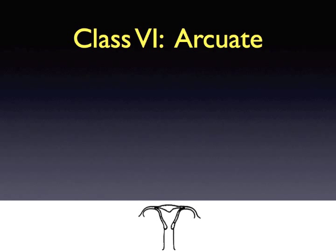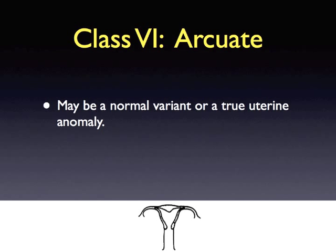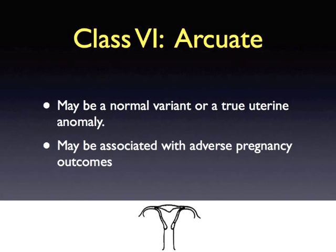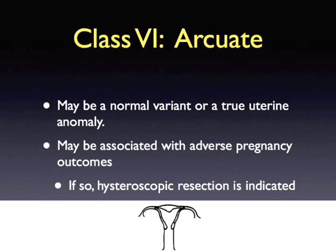Class 6 uterine anomalies are arcuate uteri. An arcuate uterus can sometimes be considered a normal variant or a true uterine anomaly. Diagnosis is made via MRI or 3D ultrasound, showing a broad indentation seen at the fundus of the uterus. Patients with an arcuate uterus may experience either successful or unsuccessful obstetrical outcomes. As with septate uterine anomalies, resection is the treatment of choice, but is only indicated with recurrent pregnancy loss.